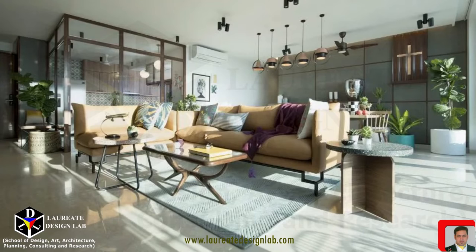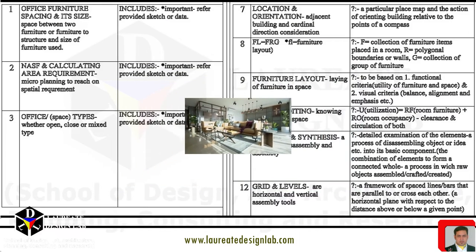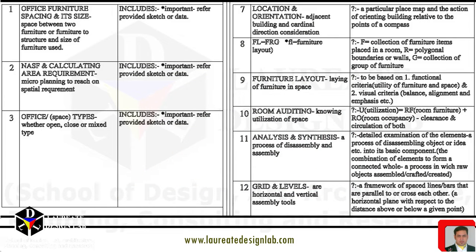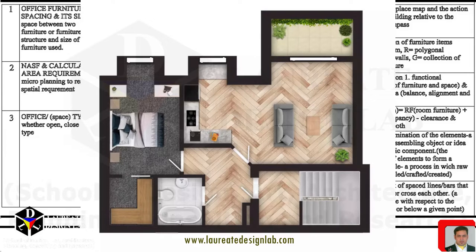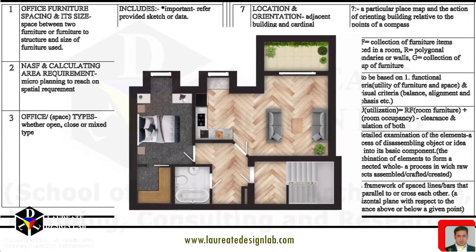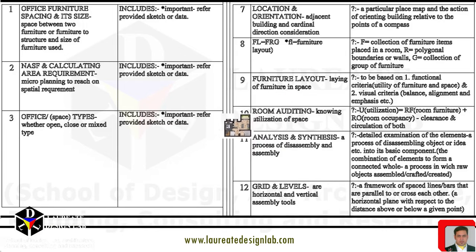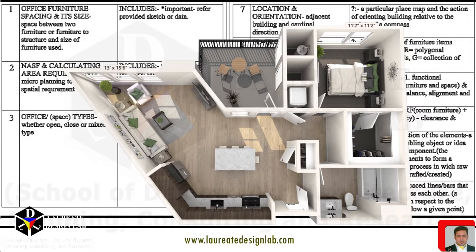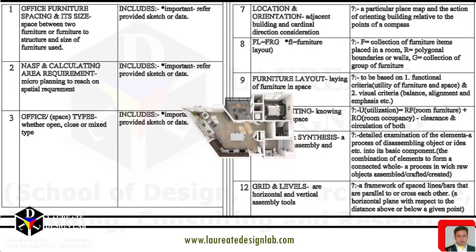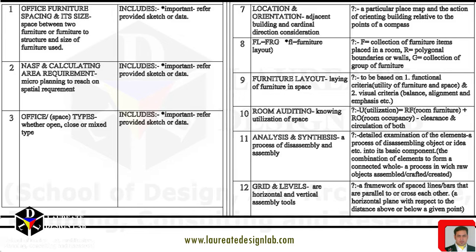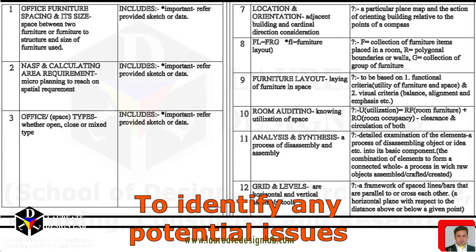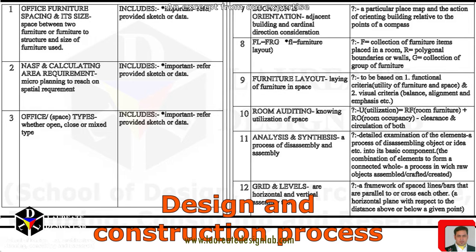Room auditing can be used to plan furniture layout for a new project. The process begins with understanding the intended use of the space and the activities that will take place in it. This information is used to identify the necessary furniture pieces and their required dimensions, as well as how much space will be needed for movement and circulation. The room auditing process can also include creating a floor plan and making decisions about the placement of furniture, electrical outlets, and other features. The layout is then optimized to ensure that it is functional, efficient, and visually pleasing, while also meeting the needs of the people who will use the space. Room auditing can also be used to identify any potential issues or areas for improvement, which can be addressed during the design and construction process.